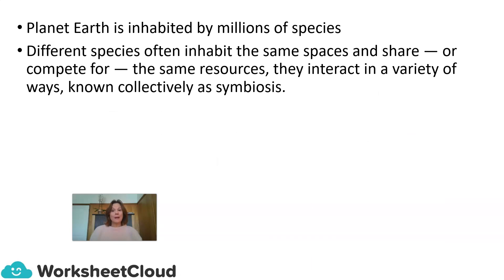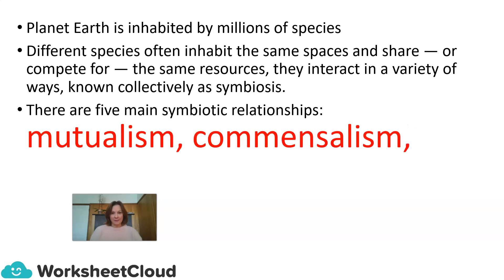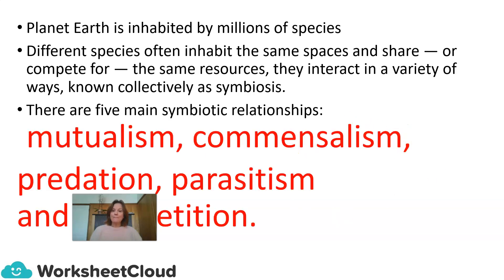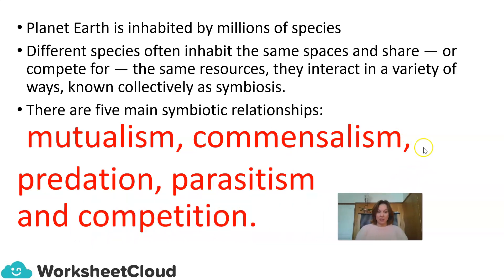Planet Earth is inhabited by millions of species. Different species often inhabit the same spaces and share or compete for the same resources. They interact in a variety of ways, known collectively as symbiosis. There are five main types of symbiotic relationships that we are going to look at: mutualism, commensalism, predation, parasitism, and competition.